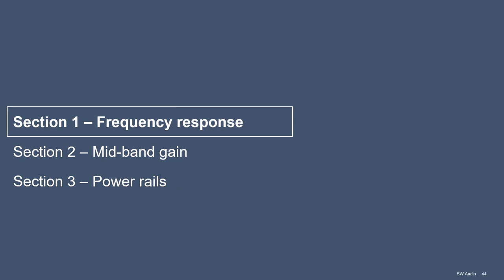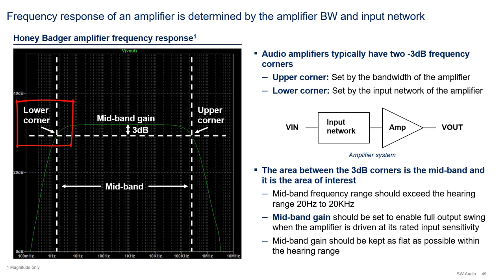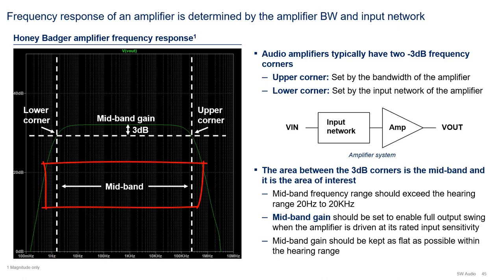Let's get started with our first topic: frequency response of an amplifier. Audio amplifiers typically have two frequency corners — an upper corner and a lower corner. These are the frequencies at which the magnitude of the amplifier's gain has dropped by 3 dB, or to approximately 71% of its nominal value. Typically, the lower frequency corner is set by the input network and its DC blocking properties, and the higher frequency corner is set by the amplifier's bandwidth. The frequency area between the lower and upper frequency corners is called the mid-band, which is the operational frequency range of the amplifier.